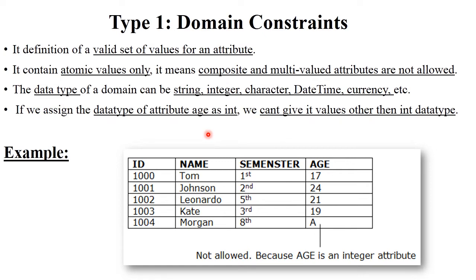Let's take another example: mobile number. The constraint applied on mobile number is that it must be equal to 10 digits only — a user can't enter more than 10 digits. This is also an example of domain constraints. In domain constraints, only atomic values are allowed, meaning you can't enter multiple values into a single column. For example, you can't enter both 'Tom' and 'Johnson' into a single row — it supports only atomic values. Multi-valued attributes are not allowed. You can apply constraints on any data types like string, integer, characters, date, time, currency, etc.